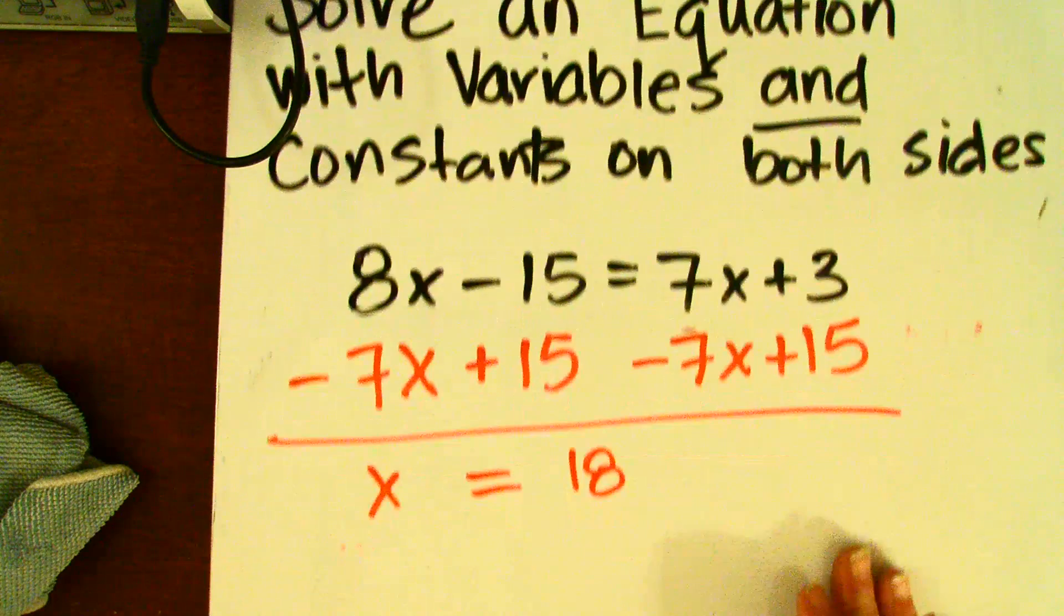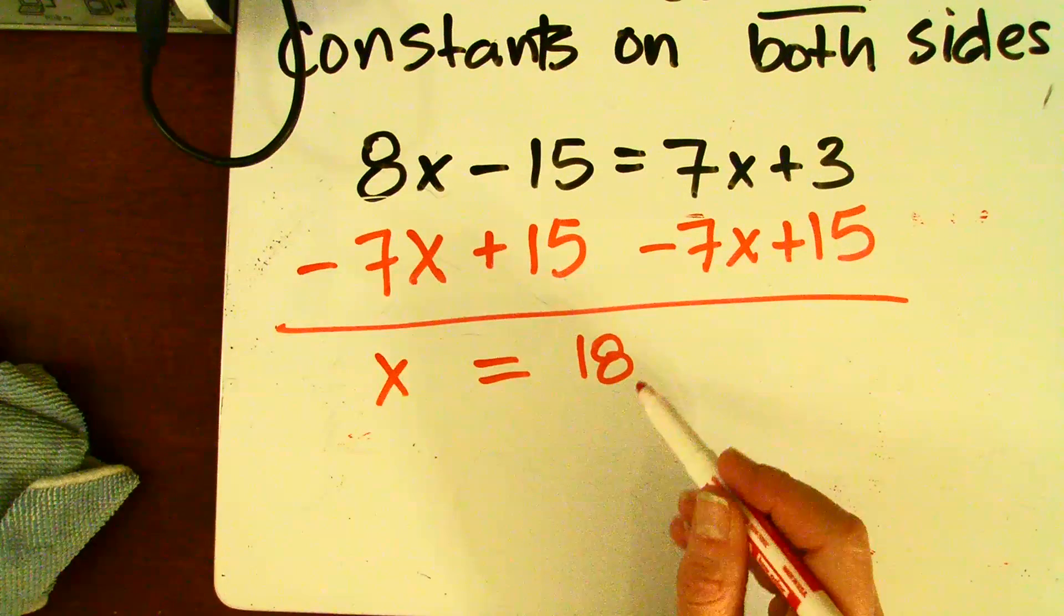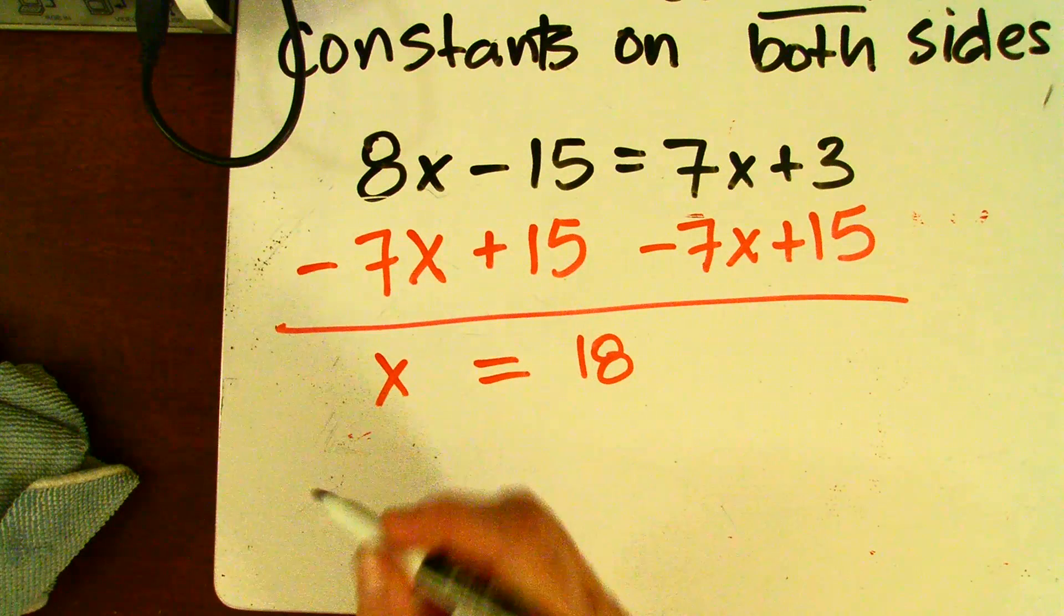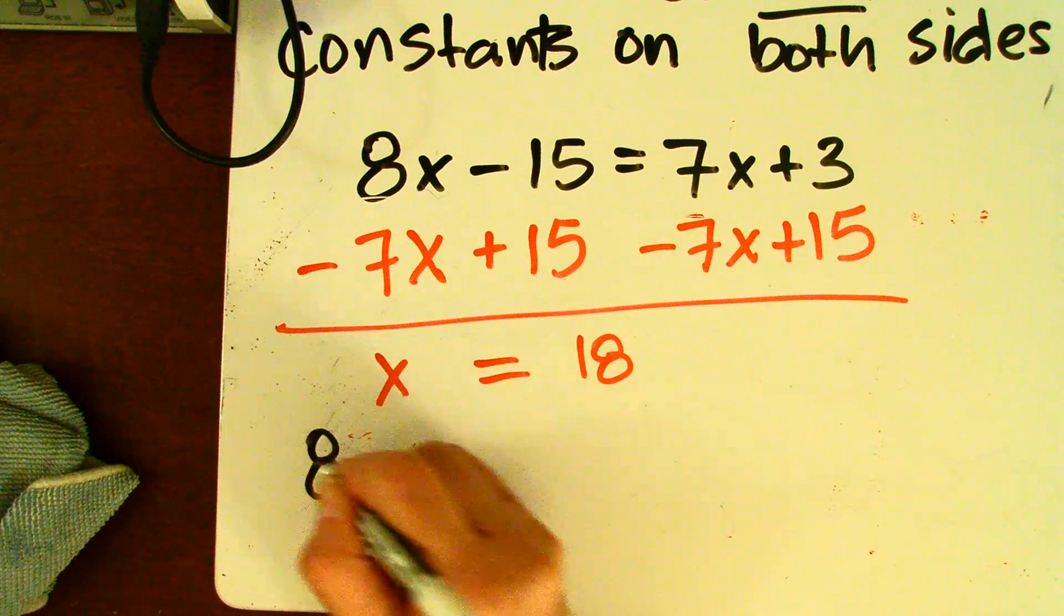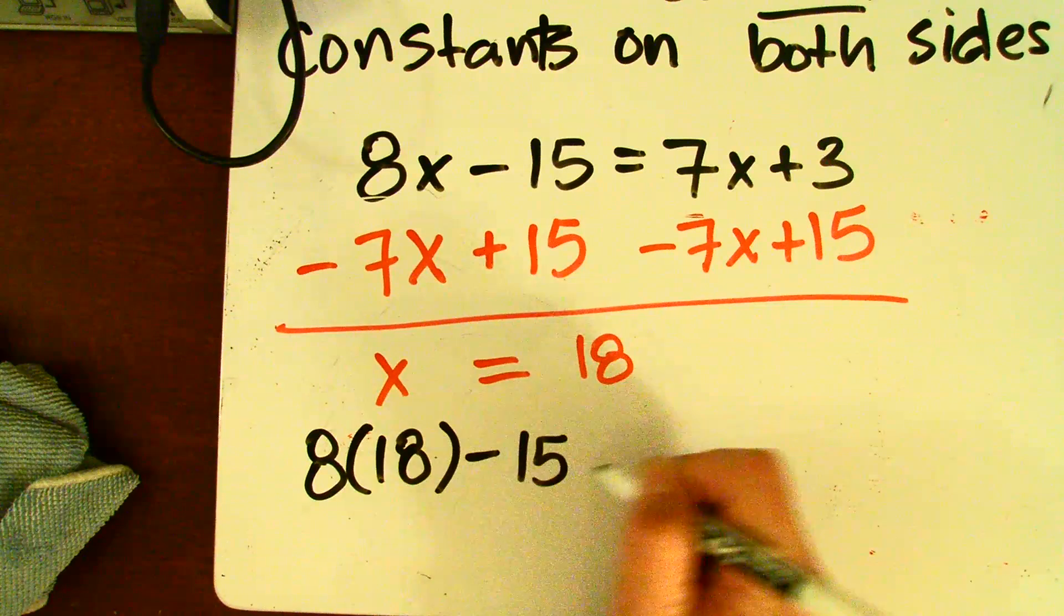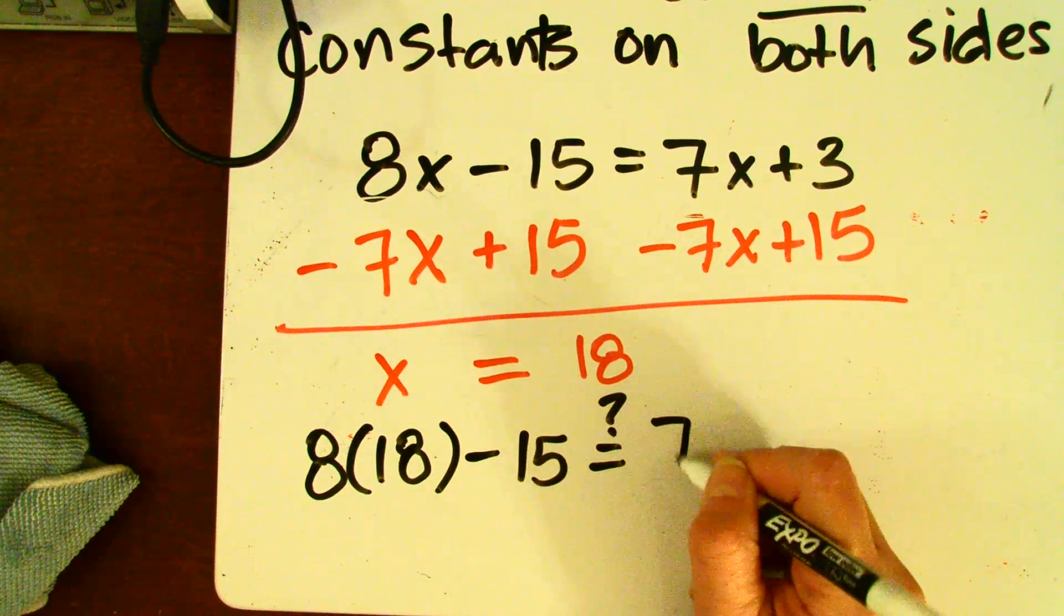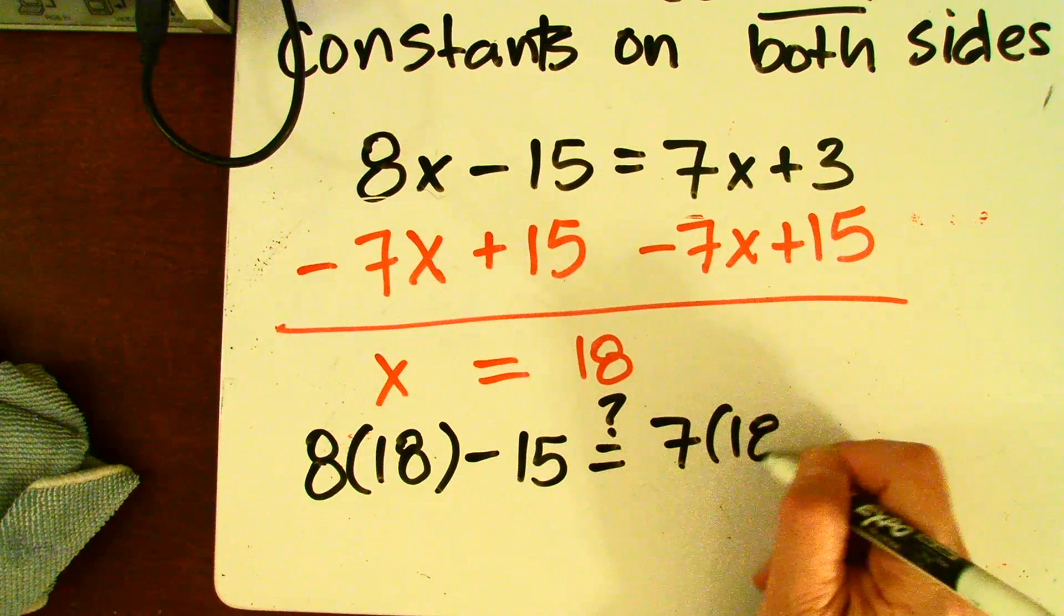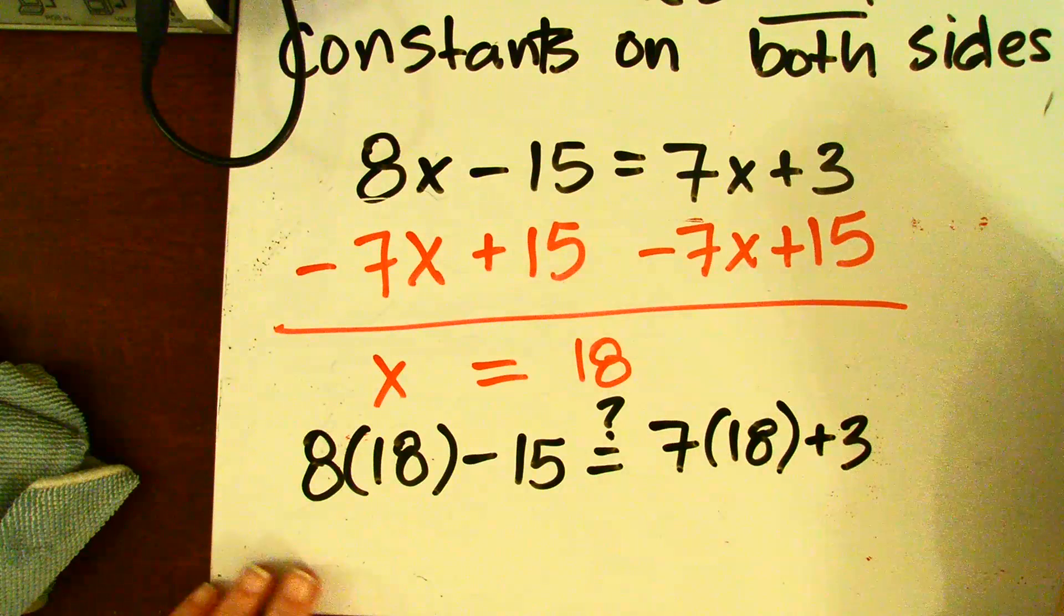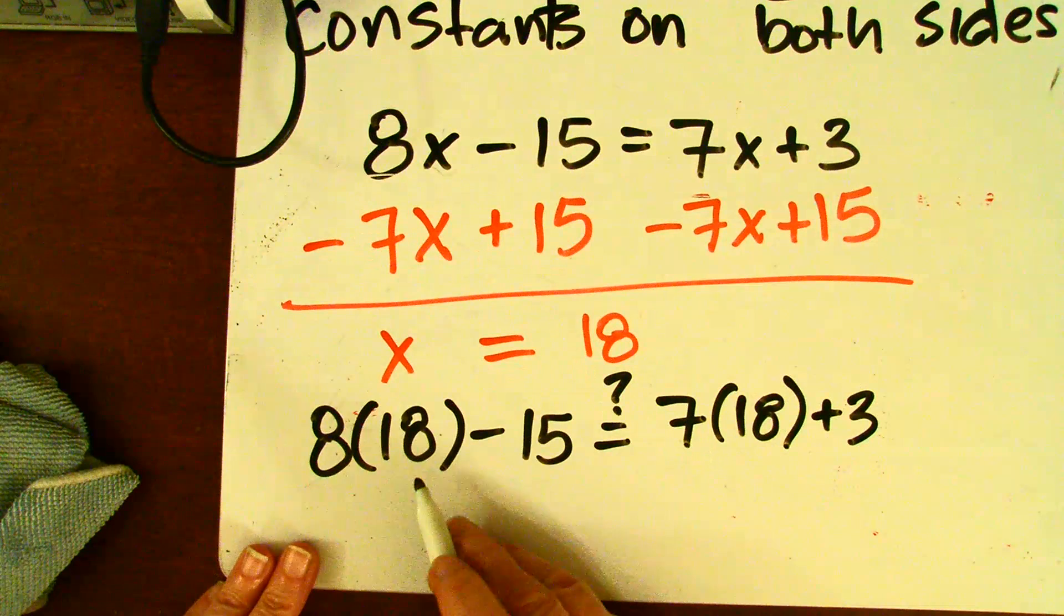Now, let's go ahead and plug in 18 for the x to see if this is the solution. Here we have 8 times 18 minus 15, and we want to know if that is equivalent to 7 times 18 plus 3. Now, I don't know what 18 times 8 is, so I need to figure that out.